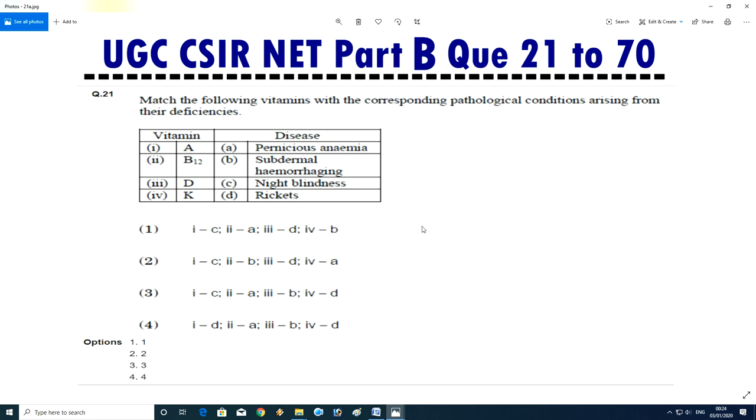Question No.22/23 - Match the following vitamin with corresponding pathological condition arising from their deficiency. Vitamin A to night blindness, vitamin D to subdermal hemorrhage, vitamin K to rickets, B12 to paresthesia. So A to night blindness, then third, A to C, second, B to D, and fourth A to rickets.